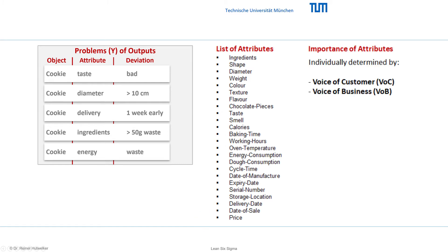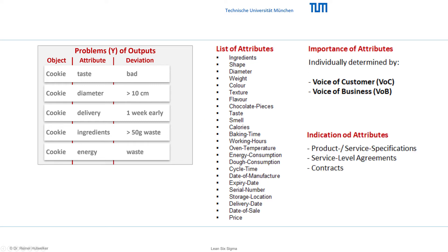The importance of these attributes varies individually. For one person, the taste of cookies comes first. For others, the calories are the deciding factor when buying. Important attributes of outputs are listed in specifications, service-level agreements, and contracts.